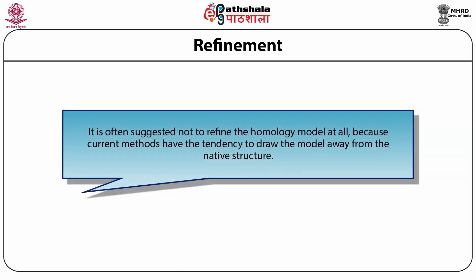Regarding the refinement step, some people strongly suggest not to refine the model at all. The reason is that if you have a model partly taken from an experimental structure — which is pretty good — but some parts like loop building are not good, then when you refine, the errors in the poorly defined parts tend to contaminate the parts you know well. This often makes the refined model diverge away from the correct structure. There is a controversy in the area whether one should use refinement or not.